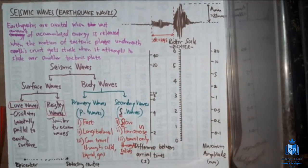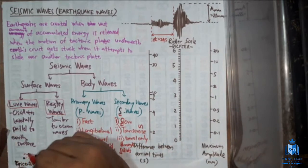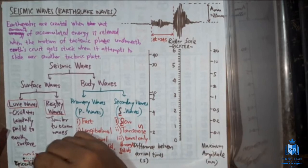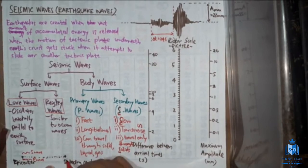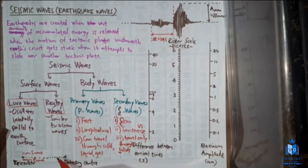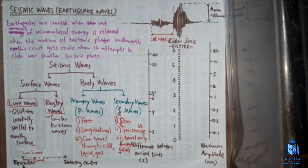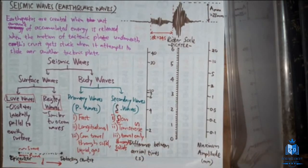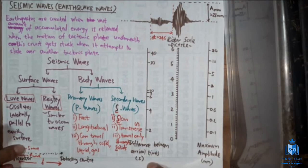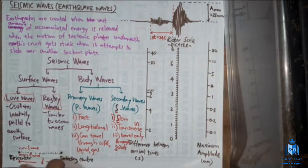From the epicenter, both P waves and S waves are produced. Since P waves are faster than S waves, they reach the detecting center first, followed by the S waves. Based on the time interval between the arrival of the P wave and the S wave, you can calculate the distance between the epicenter and the detecting center — using the known speeds of each wave (typically about 5 km/s for P waves and 3 km/s for S waves).